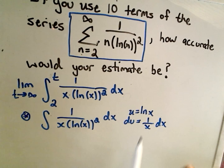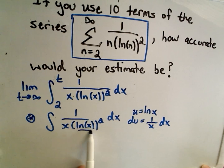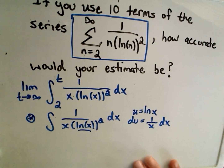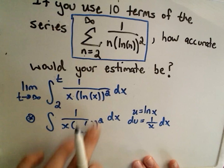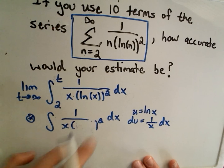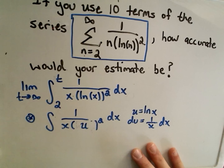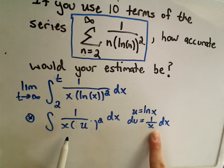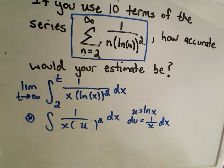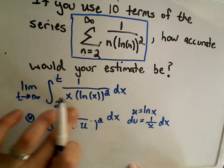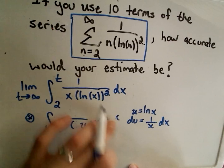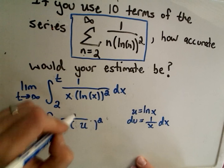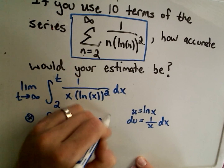We replace the natural logarithm of x with u, so instead of having ln of x squared we have u squared. We're left with 1 over x dx, which conveniently equals du. So we can replace the 1 over x dx with simply du.